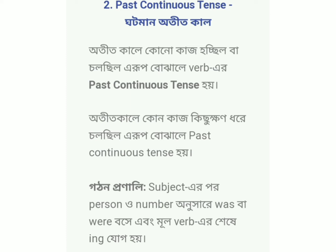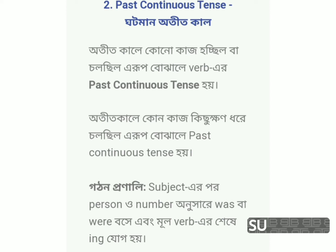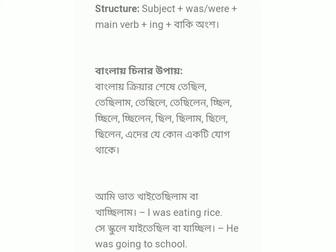In the past, if any action was continuing or in progress at a certain point, that is past continuous tense. The structure is: Subject + was/were + main verb + ing + extension.